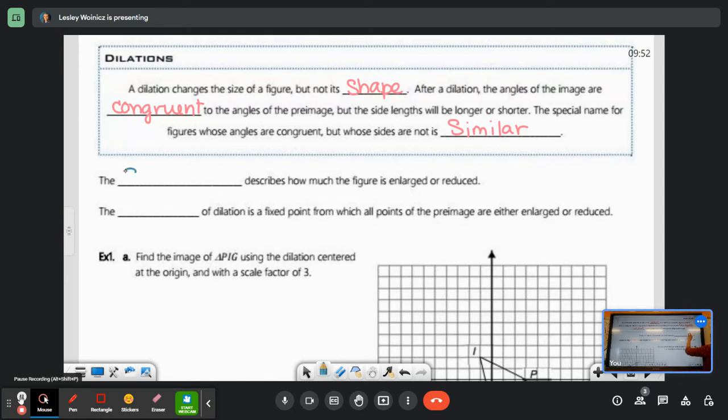The scale factor is going to tell us how much the figure is enlarged or reduced. We did something like this in Algebra 1 when we said it was vertically stretched by a factor of however much. But the scale factor isn't just going to stretch it up and down. It's going to stretch it all the ways.